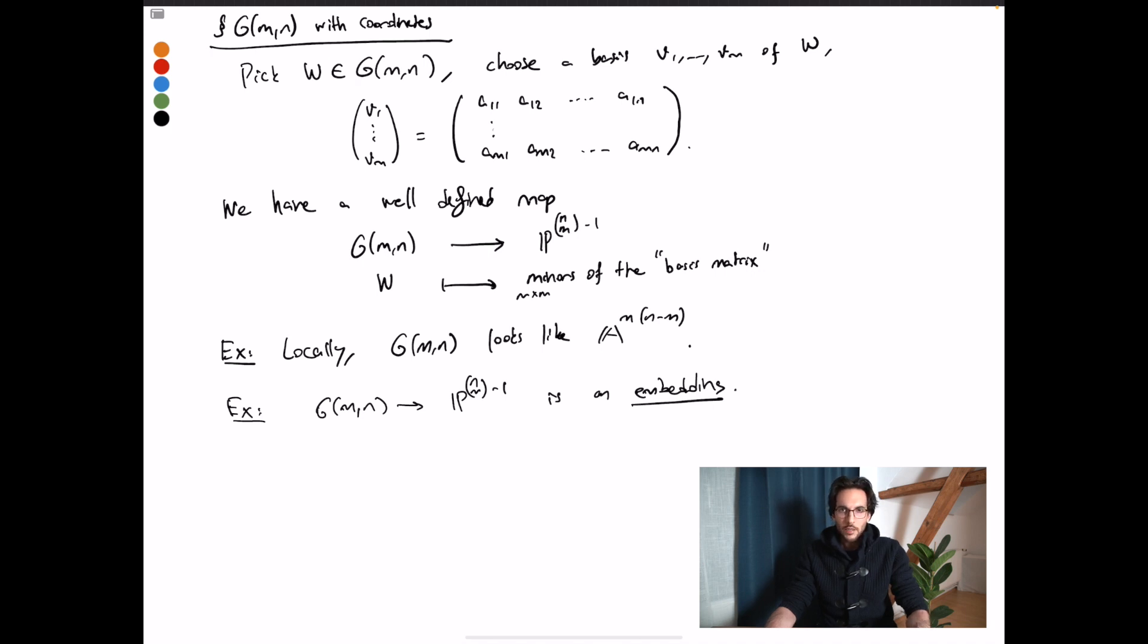And then something we will see later, but something maybe you can try to convince yourself, is that the image is closed in this Plücker embedding. In this exercise of trying to convince yourself that the image is closed, you can play around with the Grassmannian of lines in P^3, G(2,4). There we have an equation, a quadric, and any point satisfying this quadric should give us a two-plane inside a four-dimensional space. That's one way to convince yourself. We will do this formally in the next section.